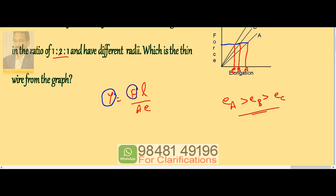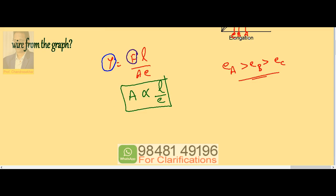So here our interest is wire thickness. A proportional to L by E. Since lengths are same for A and C, let us first take A and C. According to area equation A proportional to L by E, L is the same.